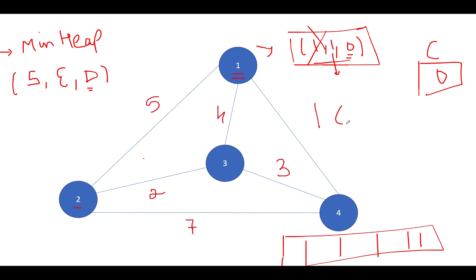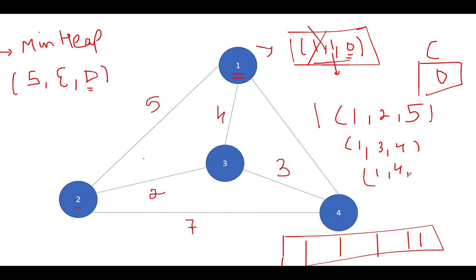Node one is connected to two by distance five, to three by distance four, and to four by distance one. Before adding new nodes into the priority queue, we check whether the ending node was already visited — as we do in BFS traversal. So these three entries get added to the min-heap.